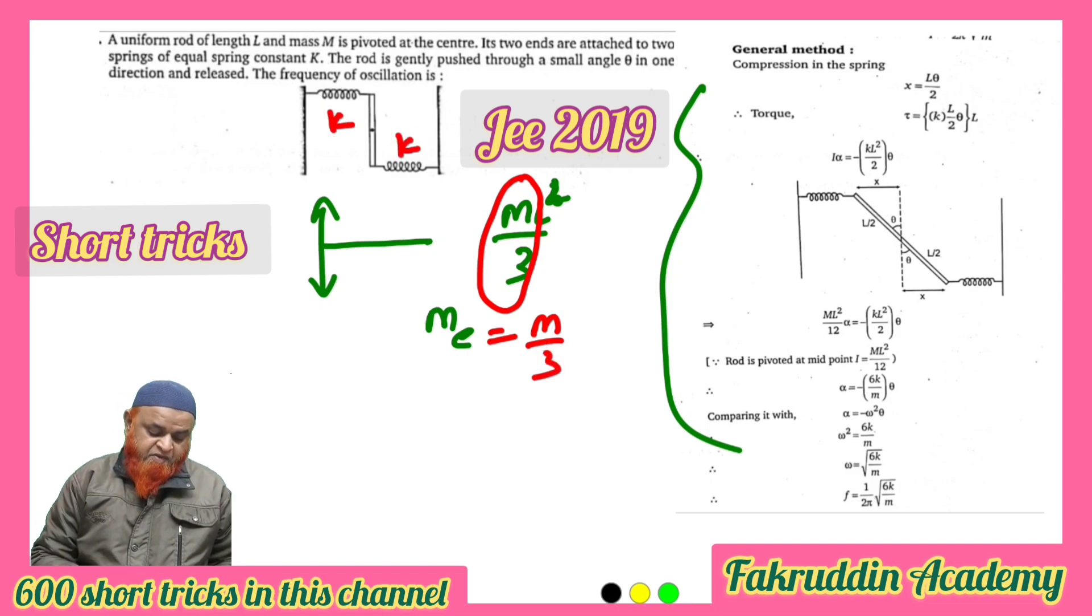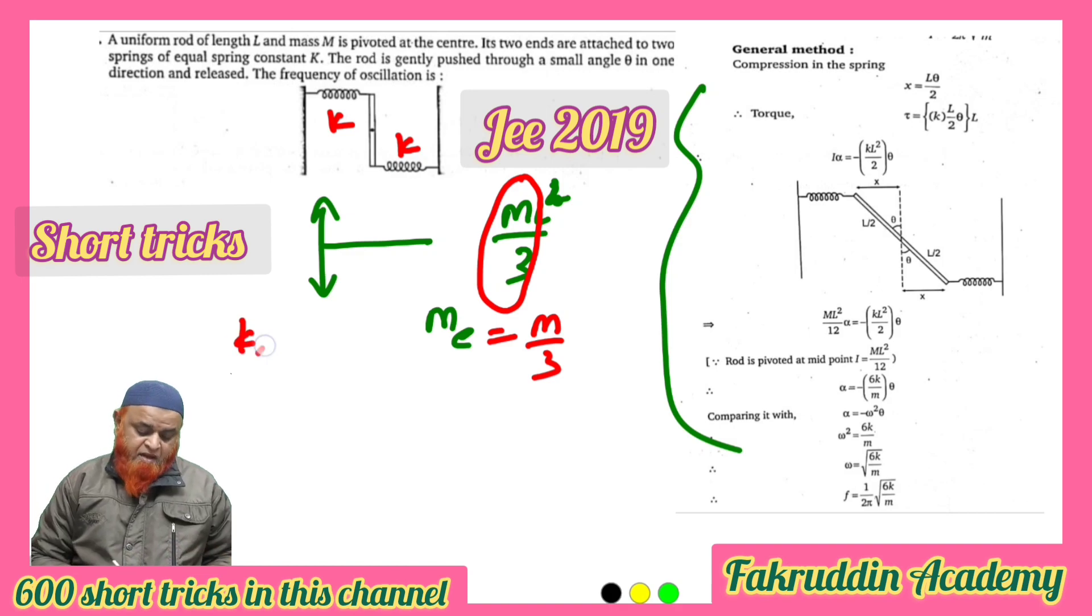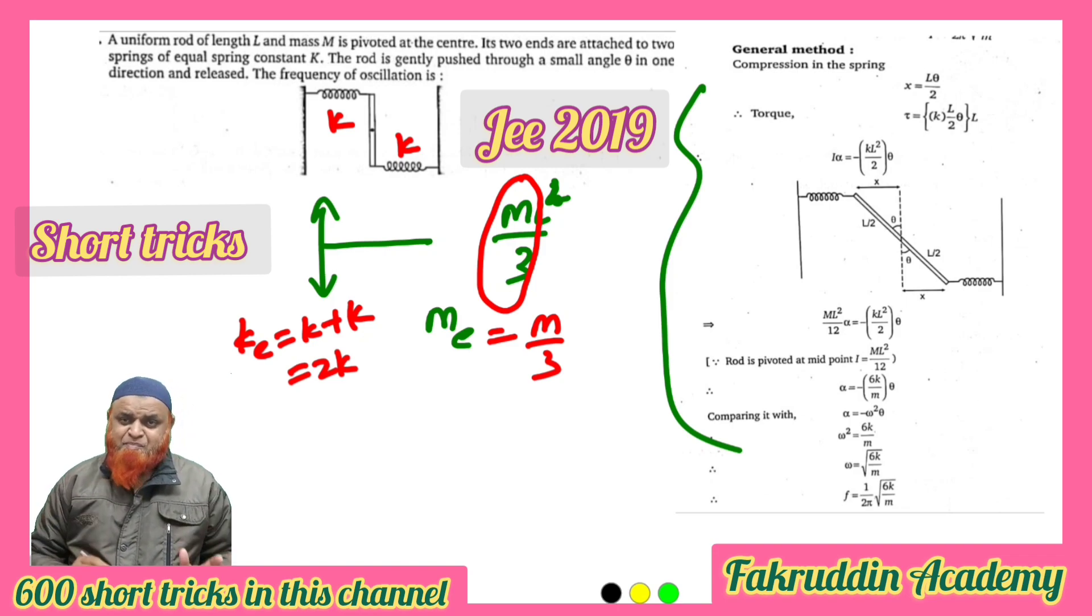And these two springs are having spring constant k and they are connected in parallel, so k effective is going to be k plus k, that is going to be 2k. That's it, you just apply the time period formula.